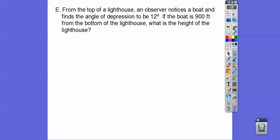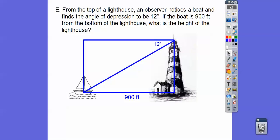So from the top of a lighthouse, an observer notices a boat and finds the angle of depression to be 12 degrees. If the boat is 900 feet from the bottom of the lighthouse, what is the height of the lighthouse? Okay, so here's the lighthouse right there, and there's that groovy boat down there. Here's the angle of depression. The angle of depression is from this horizontal line down to what they're looking at. So there's the angle of depression.